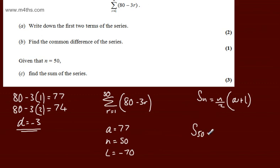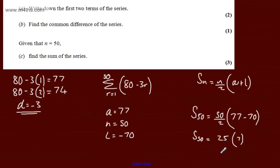So we can say the sum of the first 50 terms will be 50 divided by 2. We'll have the first, which is going to be 77, plus the last, which will be minus 70. And that will give us the sum of the first 50 terms is going to be 25 multiplied by 7, which will equal 175.